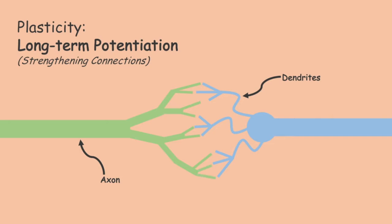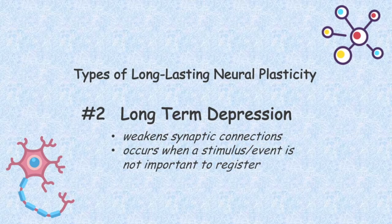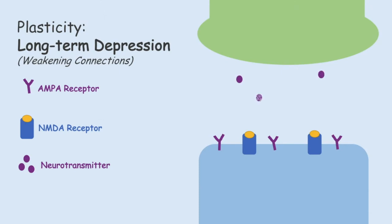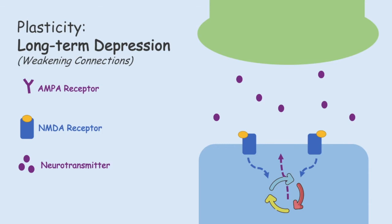Another type of plasticity is long-term depression, which involves patterns causing decreases in synaptic strength for when a stimulus or event no longer has importance. It occurs when there is less frequent neuron firing and limited NMDA activation, which signal the internalization of AMPA receptors, thus further decreasing the size of the connection and sensitivity of the postsynaptic neuron to excitatory neurotransmitters.